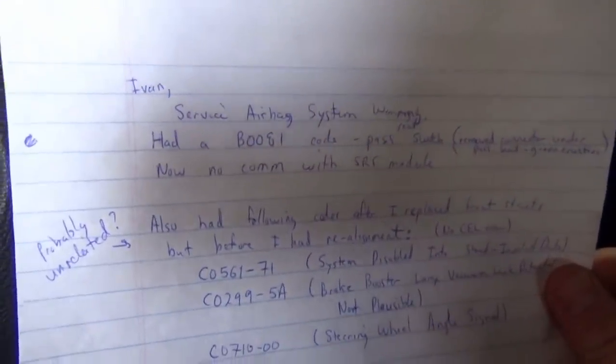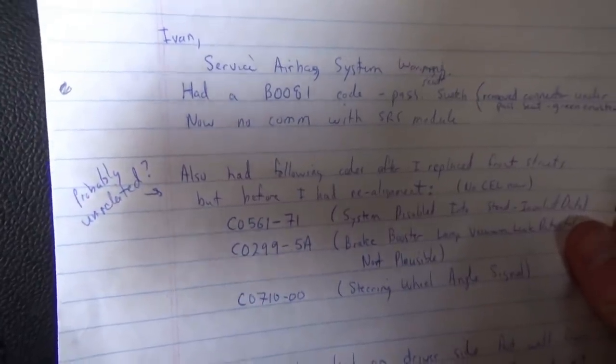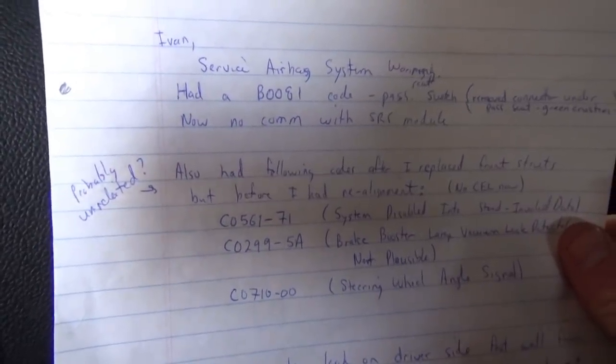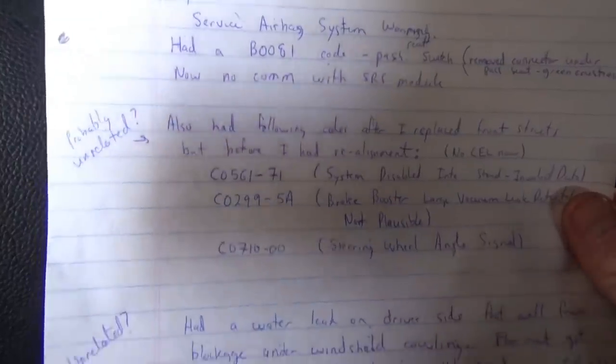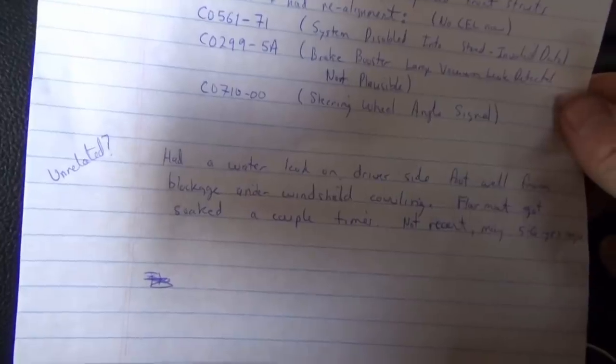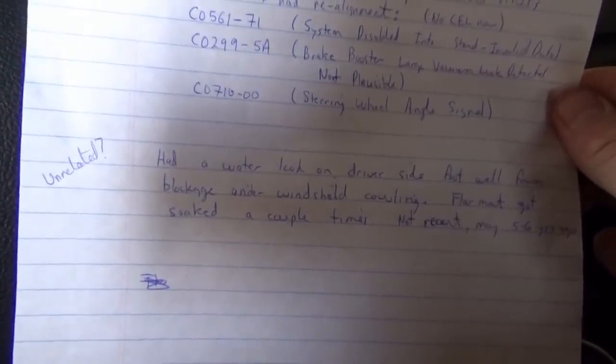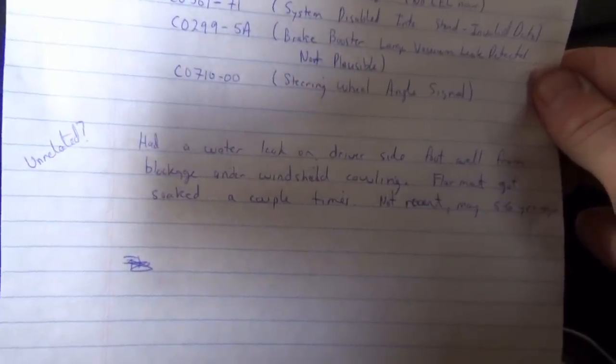He also had a following code after replacing front struts, got a realignment, no CL now, all these codes. Additionally, there was a water leak on the driver's side footwell from a blockage under the windshield cowling — the floor mat got soaked a couple times, though not recently, maybe five to six years ago.